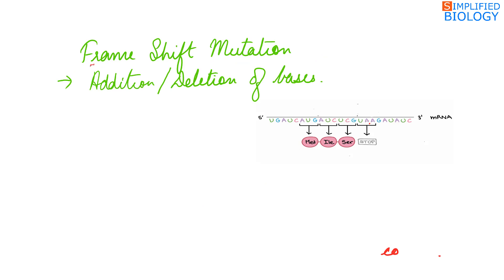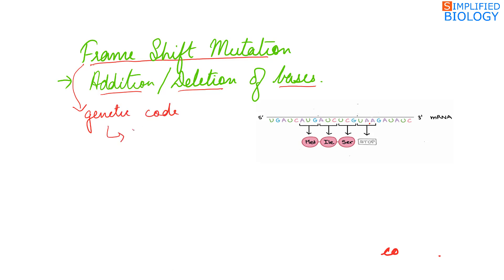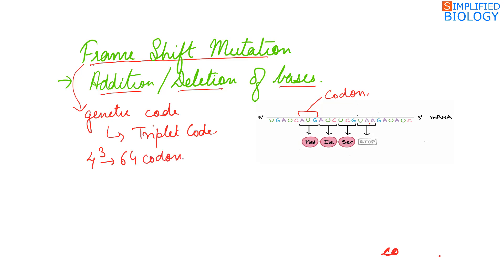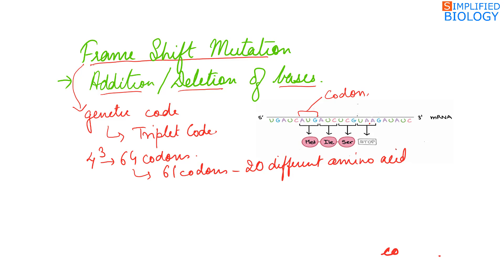Frameshift mutation occurs due to addition or deletion of bases. The framework here is the genetic code, which is a triplet code where three bases code for one amino acid, and this three-base sequence is known as a codon. Four nitrogenous bases in three-base combinations form 64 codons. Of the 64 codons, 61 code for 20 different amino acids, which means an amino acid can have two or more codons coding for it.